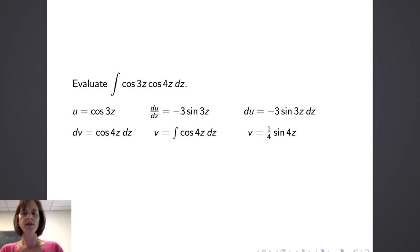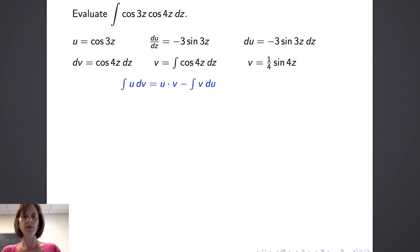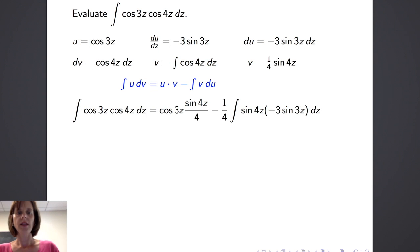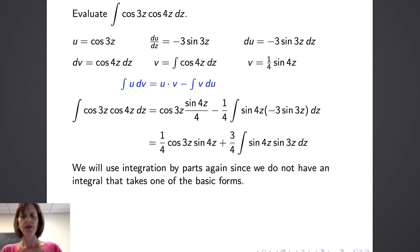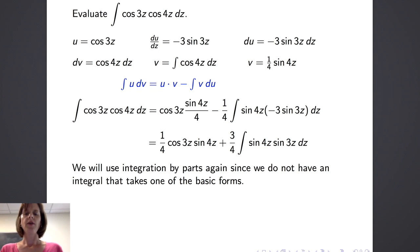We put the pieces together in our formula for integration by parts. We know that the integral of u dv is equal to u times v minus the integral of v du. We get that the integral of cosine of 3z cosine of 4z dz is equal to cosine of 3z times sine of 4z over 4, minus one-fourth times the integral of sine of 4z times negative 3 sine of 3z dz. We can do a little simplification on the right-hand side, but we will need to use integration by parts again since we do not have an integral that takes one of the basic forms.